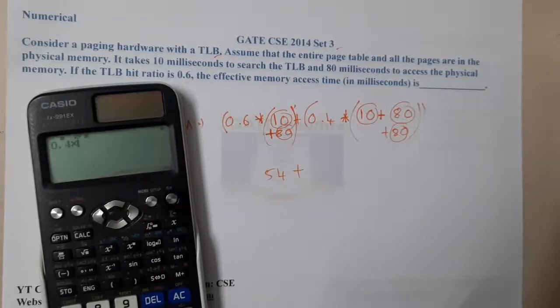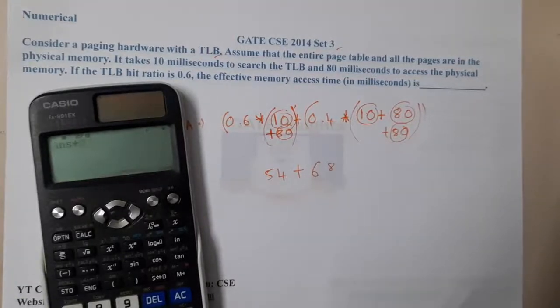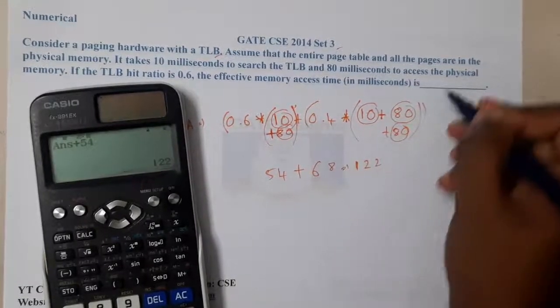Plus 0.4 into 170, which is 68 plus 54. The result is 122, so the answer here will be 122 milliseconds.